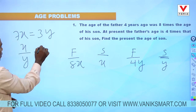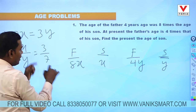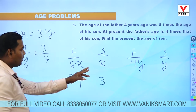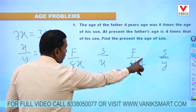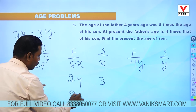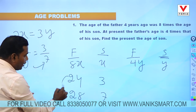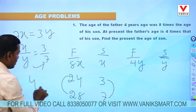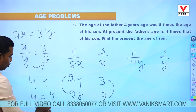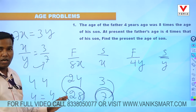So x divided by y equals 3 by 7. The father's age 4 years ago is 8x, x value is 3, so 8x is 24. Son's age is x, which is 3. Present father's age is 4y, y value is 7, so 4y is 28. Son's present age is y, which is 7. The difference 24 and 28 is 4, and 3 and 7 difference is 4, matching the 4 years. So father's present age is 28 years and son's age is 7 years.